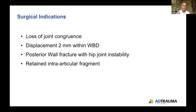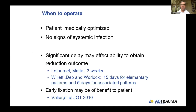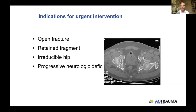Indications for surgery are those without a congruent joint, more than 2mm of displacement through the weight-bearing dome, unstable posterior wall fractures, and retained fragments. Timing of surgery should be when the patient is medically optimized with no signs of systemic infection. Delaying surgery can be detrimental — Letournel noted a change in approach after three weeks; work from Peter Warwick showed worsened reduction at 15 days for elementary patterns and as early as 5 days for associated patterns. Work from Case Western (Heather Vallier) suggests early fixation within 24 hours may be beneficial without increased blood loss. The answer is: operate as soon as you can, when you have the right team and the patient is ready.